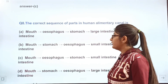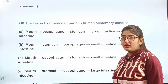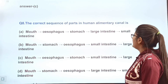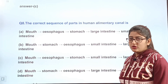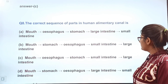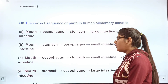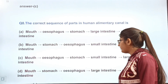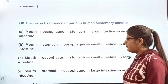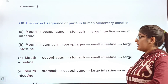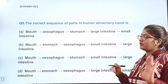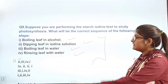Question 8: What is the correct sequence of parts in the human alimentary canal? Option A — mouth, esophagus, stomach, large intestine, small intestine. Option B — mouth, stomach, esophagus, small intestine, large intestine. Option C — mouth, esophagus, stomach, small intestine, large intestine. Option D — mouth, stomach, esophagus, large intestine, small intestine. Tell the correct structure in the comments.